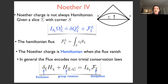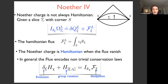The Noether charge is Hamiltonian when the flux vanishes. There are two ways for that to happen: either we look at transformations where the flux vanishes — the corner symmetry group — or transformations where flux does not vanish form the extended corner symmetry group. Adding boundary conditions can make the flux vanish. The main summary of the Noether calculation: the variation of the charges of interest under vector fields is given by the Poisson bracket with the charge when there's no flux.